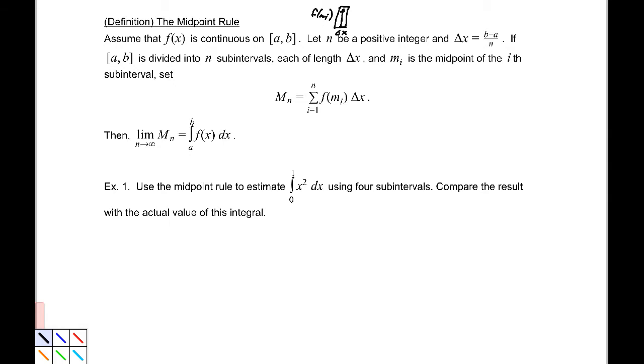Hence we get this definition: M_n is the sum from i equals 1 to n of f(mi) times delta x. The limit of that sum, if we had an infinite number of rectangles, would be our definite integral from a to b. I know that's a lot to sink in, so if you need to listen again, please do.